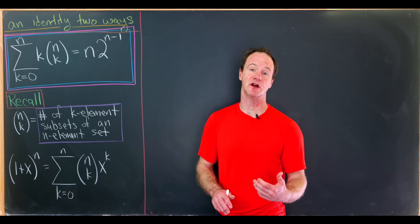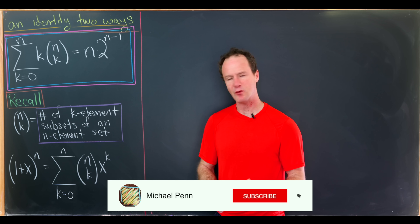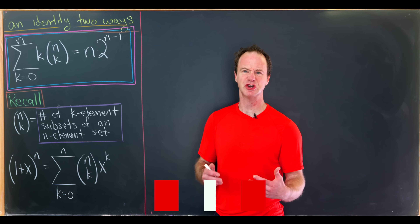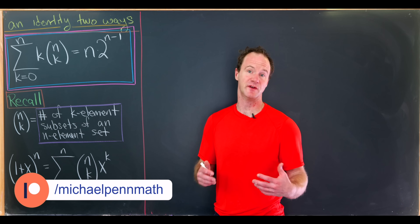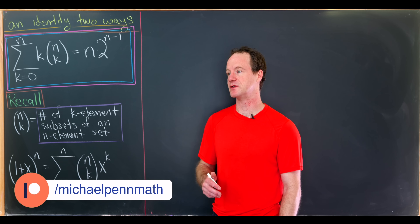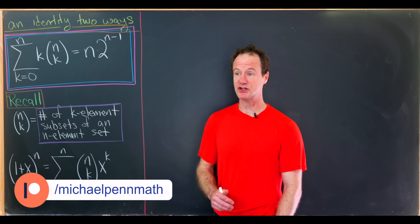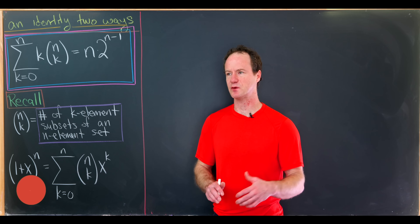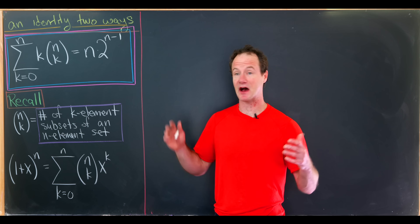Currently, I'm teaching a course on Introduction to Proof Writing, and we've been working with binomial coefficients recently. Throughout this class, I've been reminded of two nice strategies for proving identities involving binomial coefficients: either using binomial expansion or by using a combinatorial argument, which makes it seem like you're counting without counting.